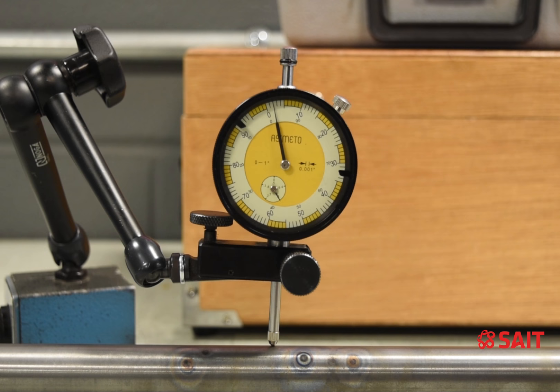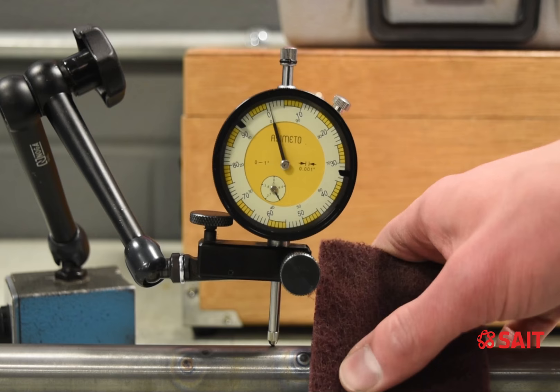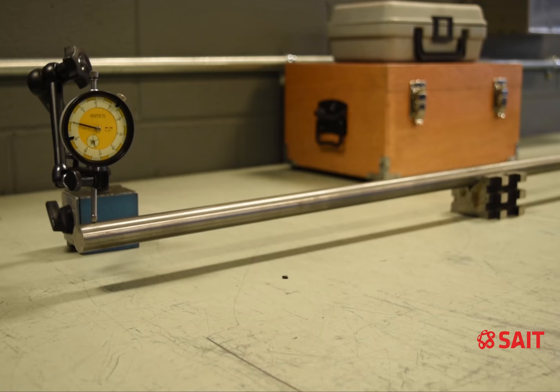You can see we've also got these little heat spots on the shaft. Using a little bit of scotch brite here, I'll just rub gently to clean off those spots so that the shaft appears bright.